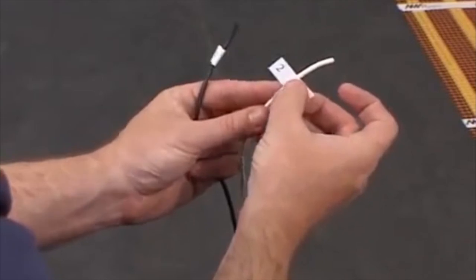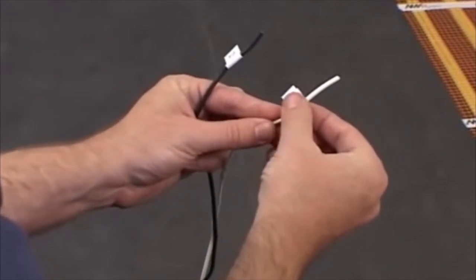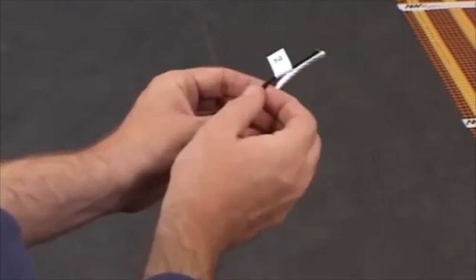Mark each pair of leads with an identically numbered sticker. The sticker should be near the end of the lead so it can be easily seen.